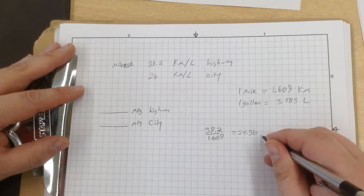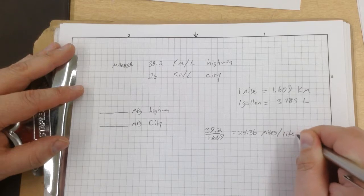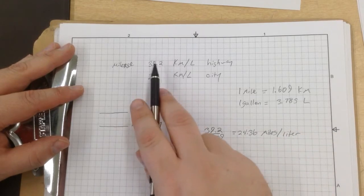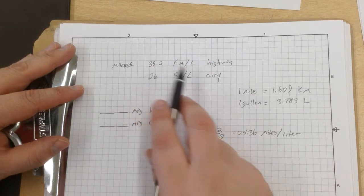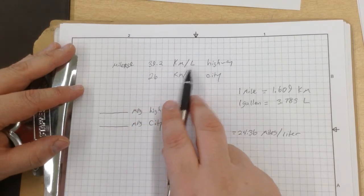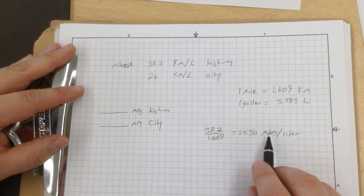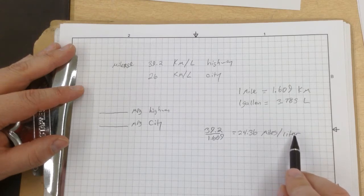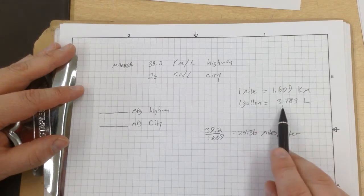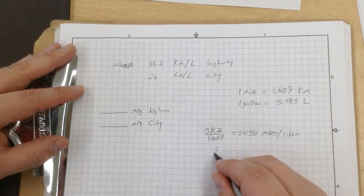This is 24.36 miles per liter. All we did was convert this number to miles. We didn't convert it to liters yet. So right now this car is getting 24.36 miles per liter. Now we need to convert this liter into gallons, and we've got that already. One gallon is equivalent to 3.785 liters.